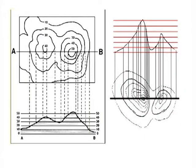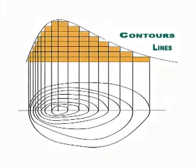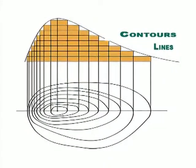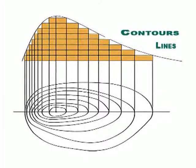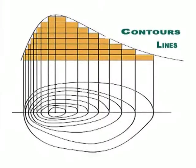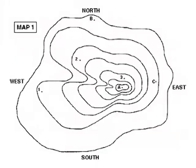Contours are the most common form of representation of terrain — a series of curved lines, each with a specified elevation set at a fixed vertical contour interval apart, representing lines of equal elevation. They are called ISO lines.